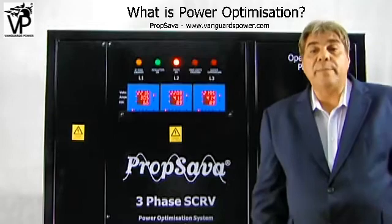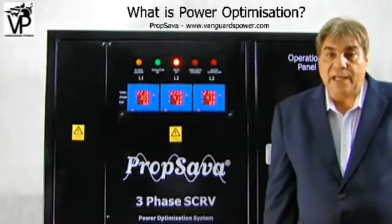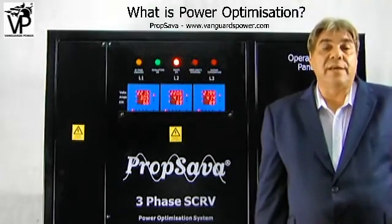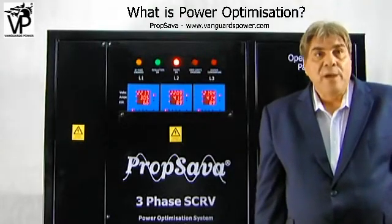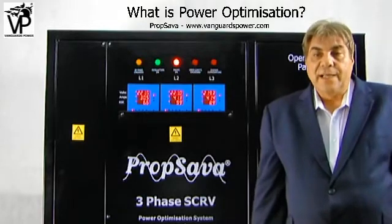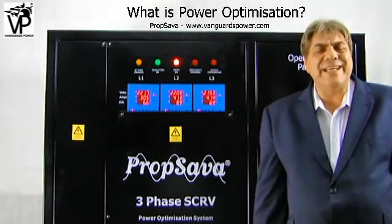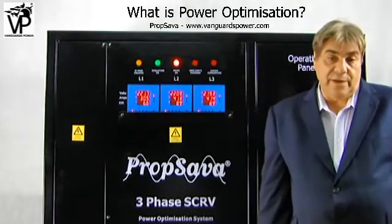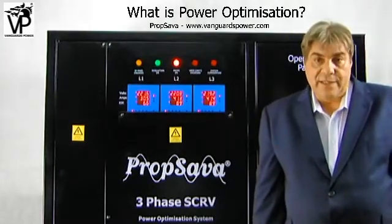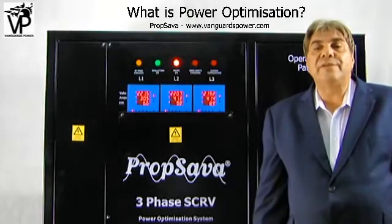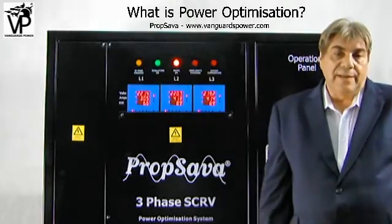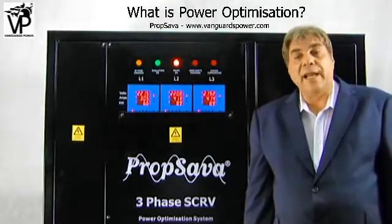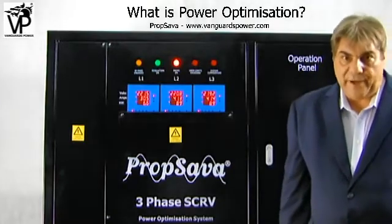For example, in Europe, Australia and many other countries the stated main phase voltage is 230 volts. However, we see in many countries that the actual incoming mains phase voltage is much higher — some in excess of 242 and in some countries in excess of 250 volts. This we see in some parts of the UK, Germany, Australia, South Africa, Norway, Sweden, just to name a few.